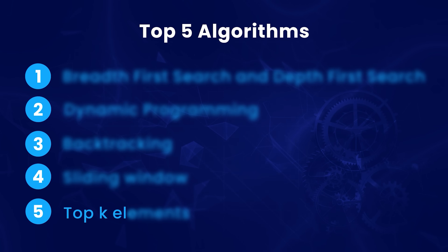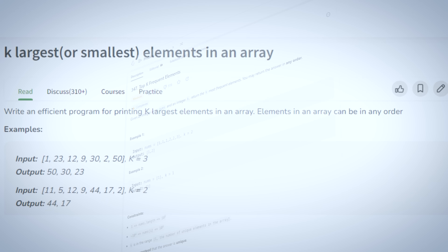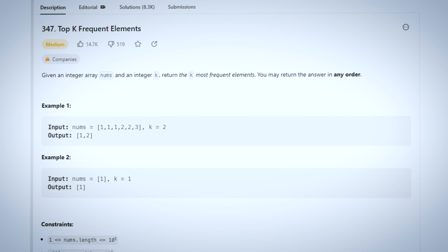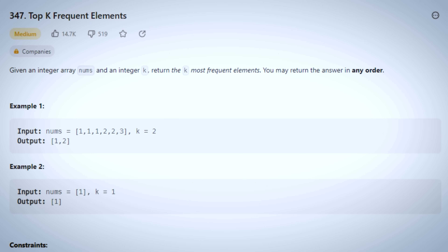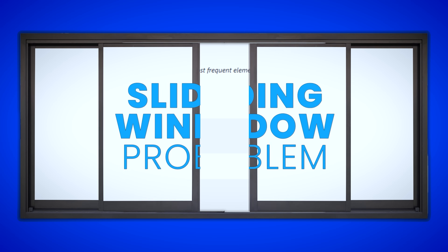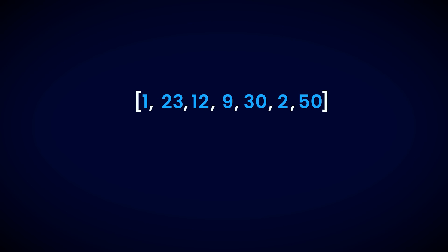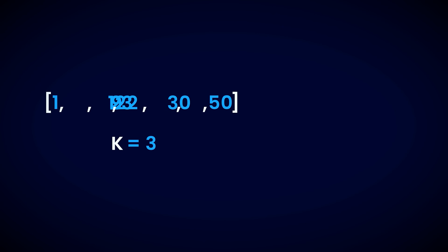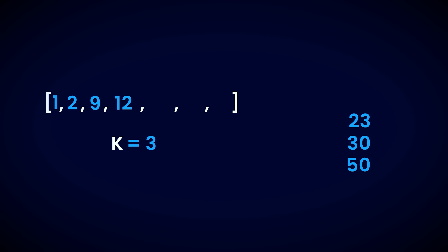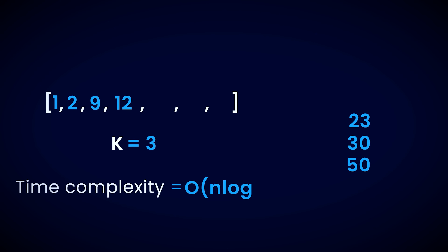At number 5, we have the Top K Elements Algorithm. This algorithm shows up in different problems — finding the K largest or smallest numbers in an array, or finding the K most frequent numbers in an array are some examples. It also shows up in some sliding window problems. For the purpose of this video, let's look at finding the K largest numbers in an array. Sorting the array and taking the K largest elements is one way of doing it, but it's not optimal because the time complexity would be O(n log n), and we can do better than that.